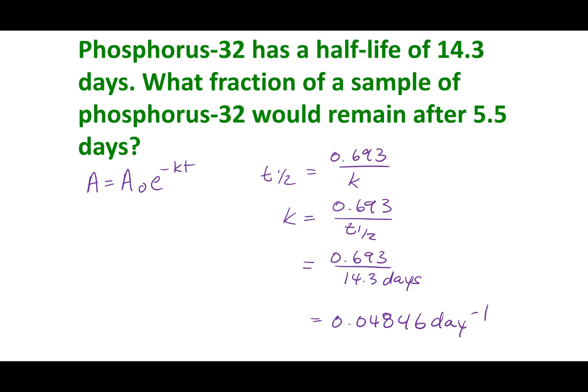So before plugging that in, let's rearrange my equation. So I'm going to put our concentration over my initial concentration, e to the minus kt. I'm going to plug in my k value, and I'm going to times it by the time, in this case 5.5. Now what I calculate out of this is 0.7660.